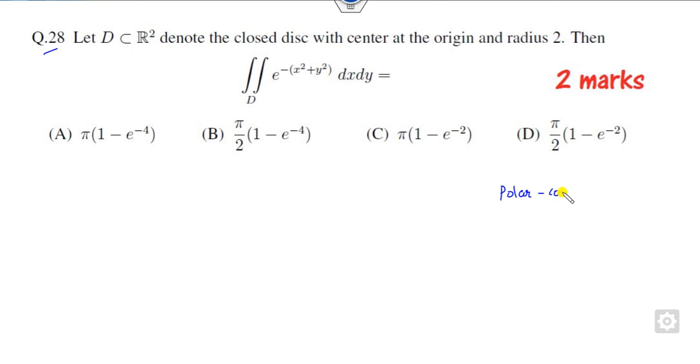You can simply draw the graph, but here you can see that the domain is not given particularly. If the domain is given like x plus y is less than 1, x square is greater than 1, and so on, then you can draw the graph and find its region. But in this example there is nothing given, so the best way is to convert into polar form.